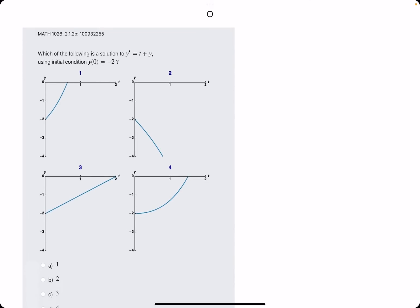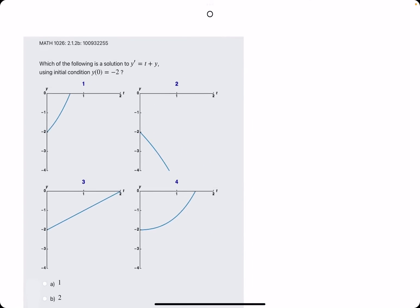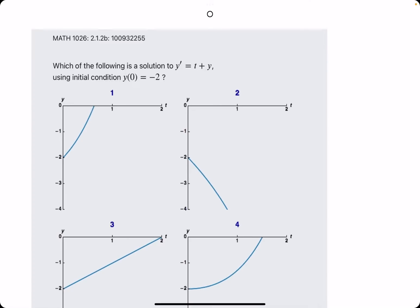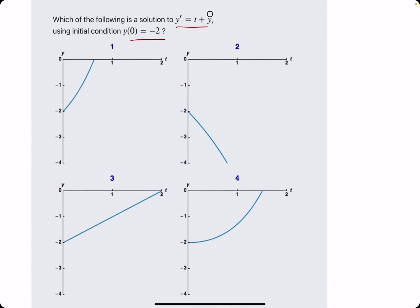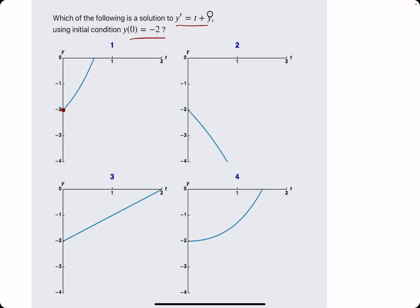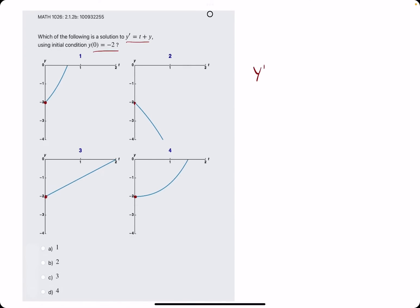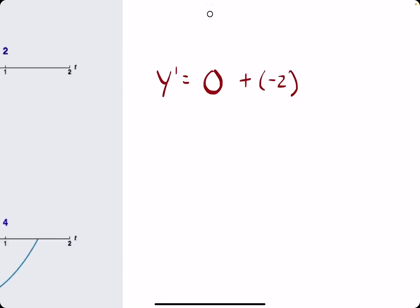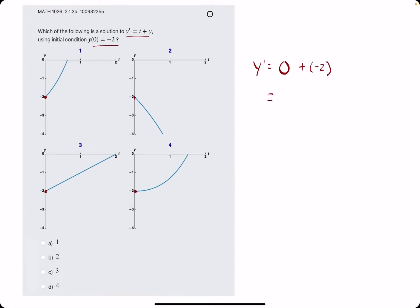Let's go ahead and do the last two examples in the same video just to knock them out. We have y prime and we have the initial condition, (0, -2). So again, all of these start at (0, -2), so no tricks there. But let's again plug in t and y respectively to calculate y prime. When we do this, we get y prime is -2. This tells us the slope right at the start should be -2.